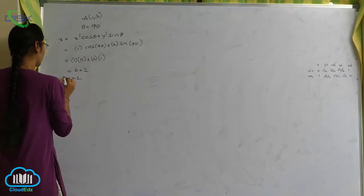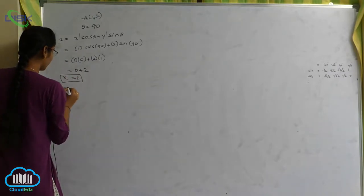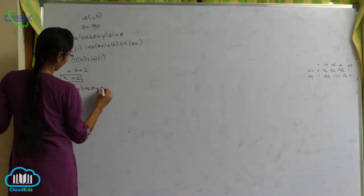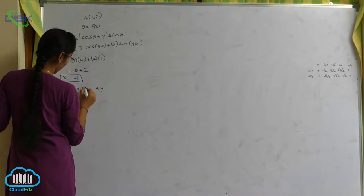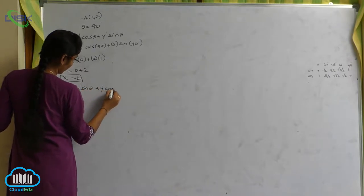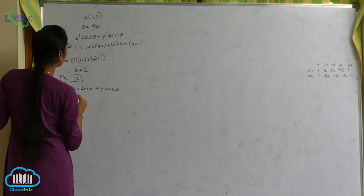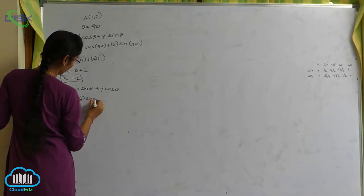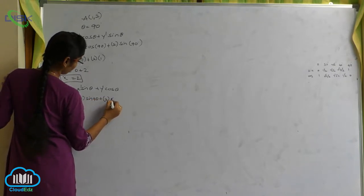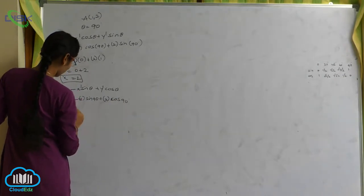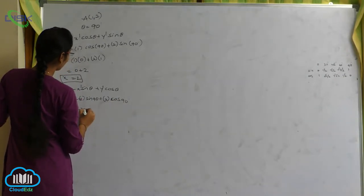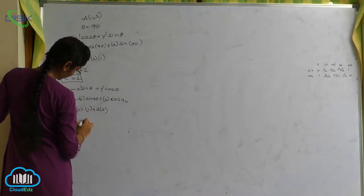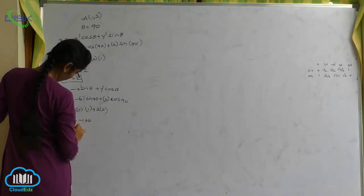Now y is equal to minus x-dash sin theta plus y-dash cos theta. So minus 1 into sin 90 (which is 1) plus 2 into cos 90 (which is 0). That gives minus 1 plus 0, so y equals minus 1.